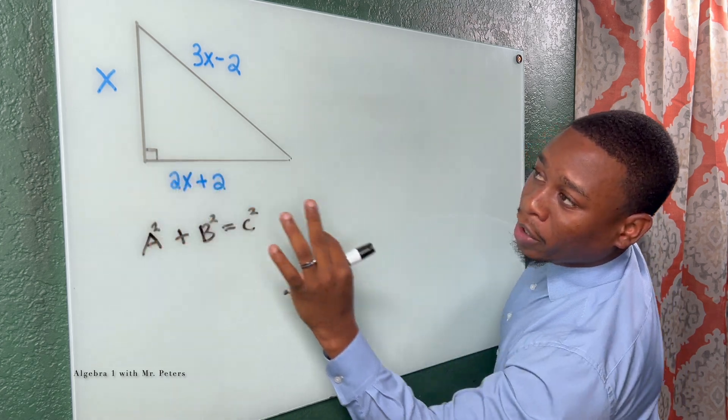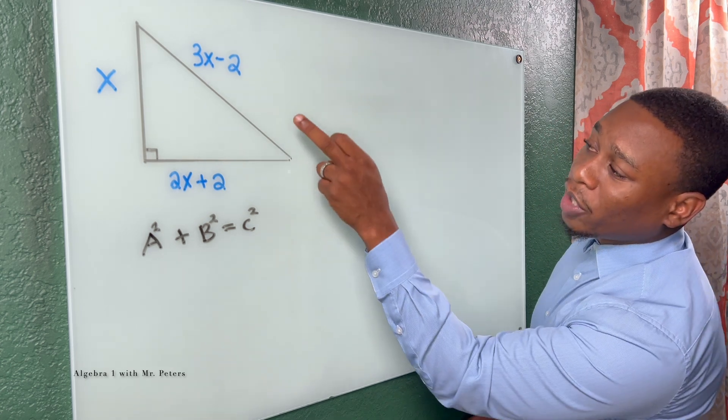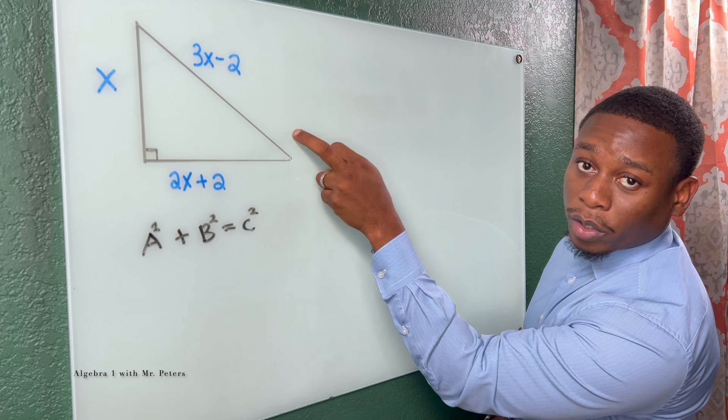We know this is A and B. If we flip those two around, we'll still get the correct answer, but we have to make sure that the hypotenuse C squared is correct.